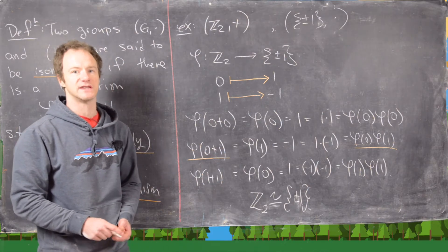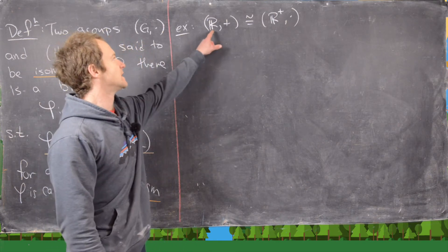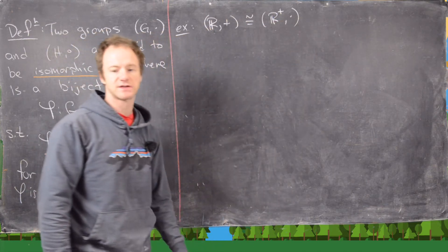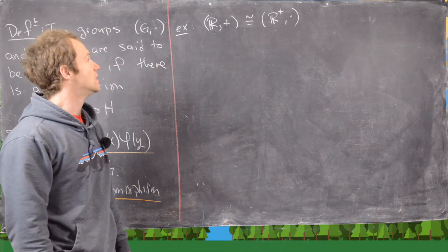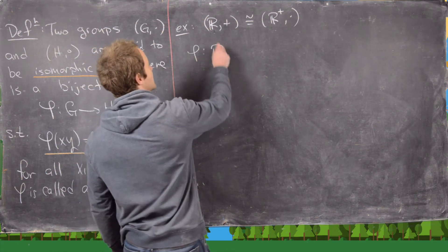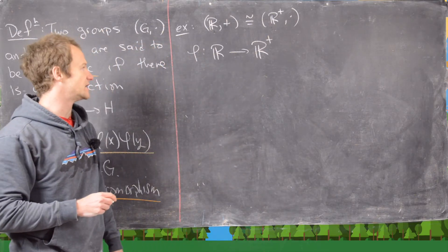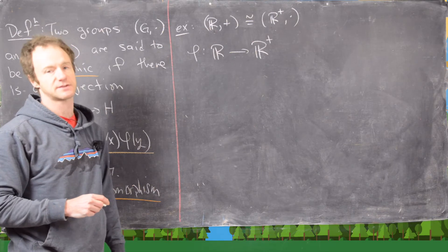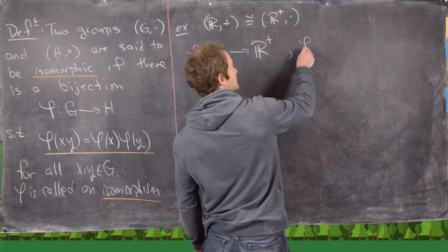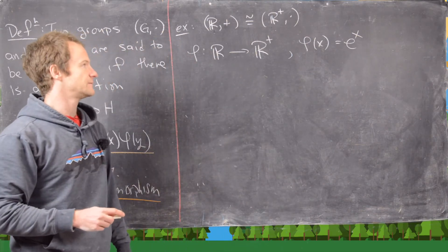The next example involves two groups of real numbers: (ℝ, +) and (ℝ⁺, ×), the positive reals with multiplication. We want a function from ℝ to ℝ⁺ that turns addition into multiplication. A natural choice is exponentiation, so let phi(x) = eˣ.